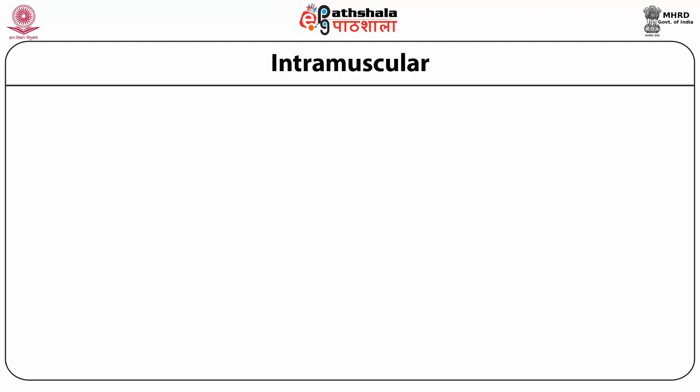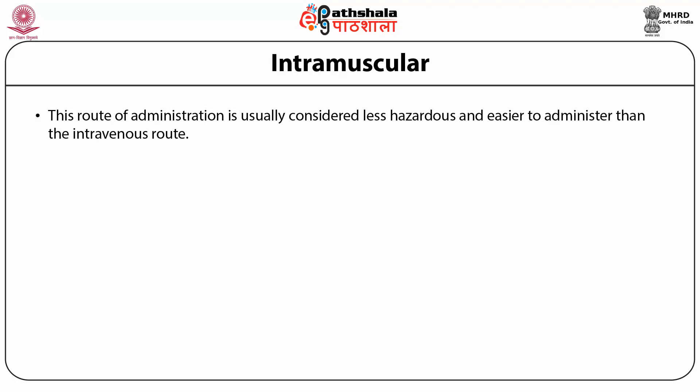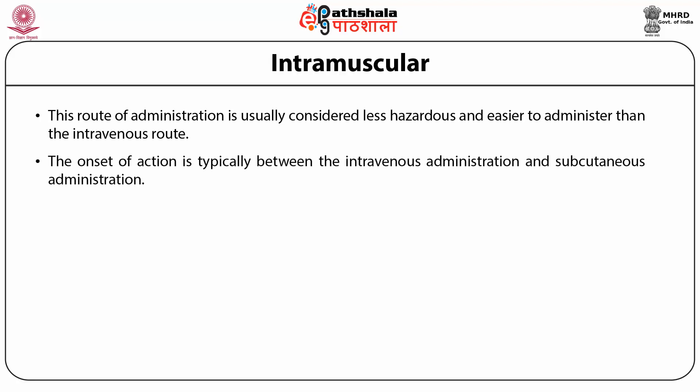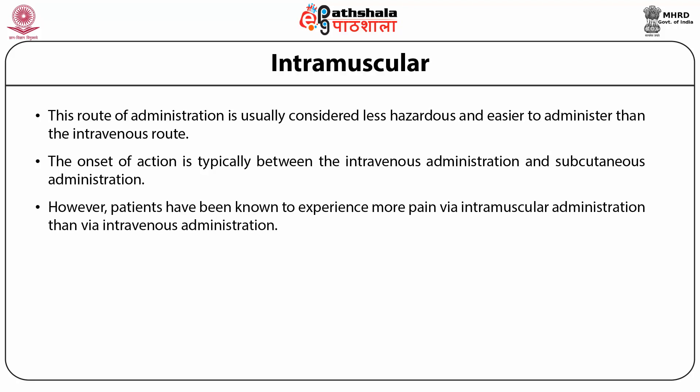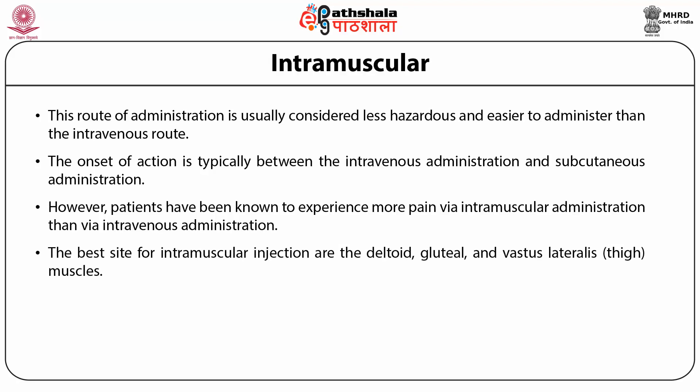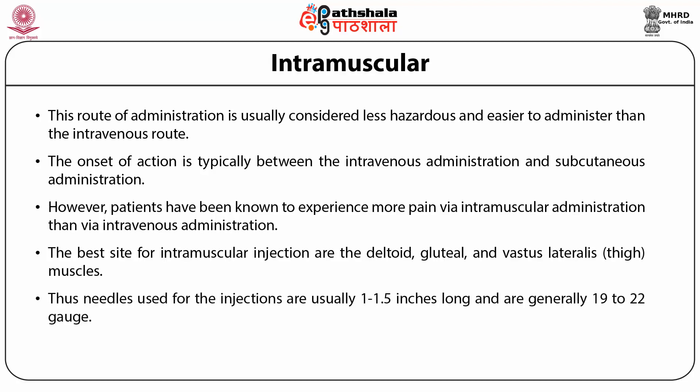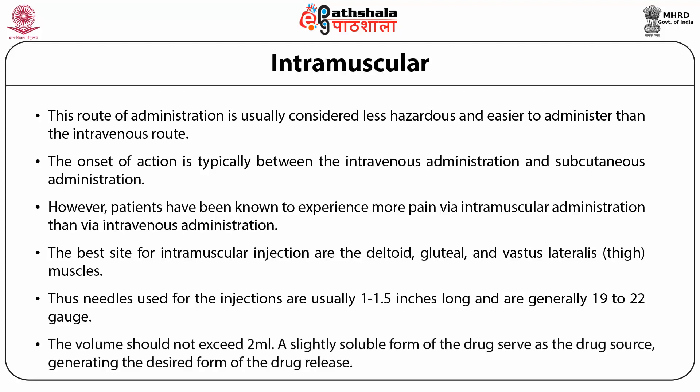The intramuscular (IM) route is generally considered less hazardous and easier to administer than the IV route. The onset of action is typically between intravenous and subcutaneous administration. However, patients experience more pain via IM than IV administration. The best sites for IM injections are the deltoid, gluteal, and vastus lateralis (thigh) muscles. Needles are usually 1 to 1.5 inches long, 19 to 22 gauge, and volume should not exceed 2 ml. A slightly soluble form of the drug serves as a drug reservoir, generating the desired drug release profile.